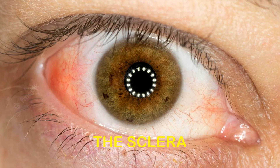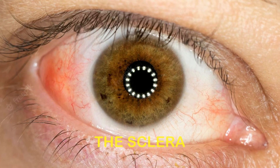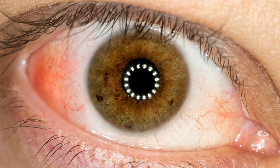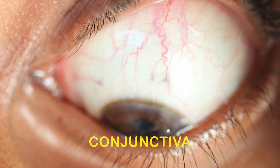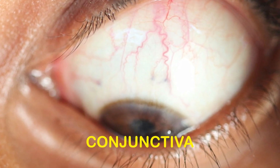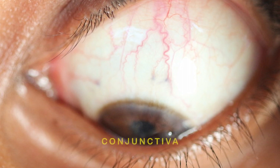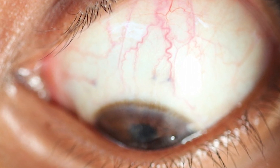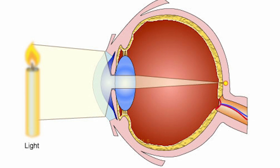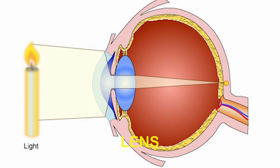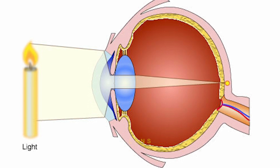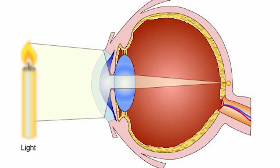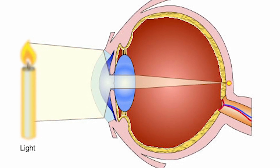The sclera is the white part of your eye that surrounds the iris. The conjunctiva is a clear thin tissue that covers the sclera and lines the inside of your eyelids. The lens sits behind the pupil. It focuses the light that comes into your eye and sends it to the back of your eye.